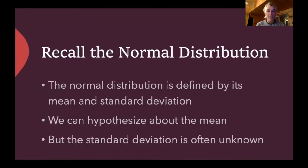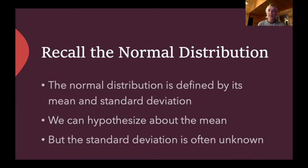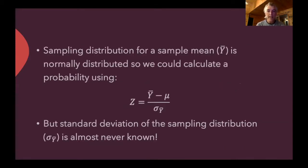If you recall from our discussion of the normal distribution, the normal distribution is defined by both its mean and its standard deviation. And while we can hypothesize about what the mean value might be, the standard deviation is often unknown. So if we were to use a z-test to determine whether or not our sample mean deviated significantly from a hypothesized value, we'd need to know the standard deviation of the sampling distribution — this sigma sub y-bar in the denominator — and this is unfortunately almost never known.